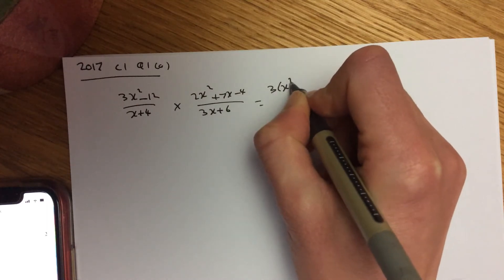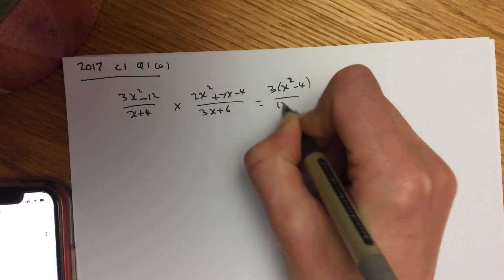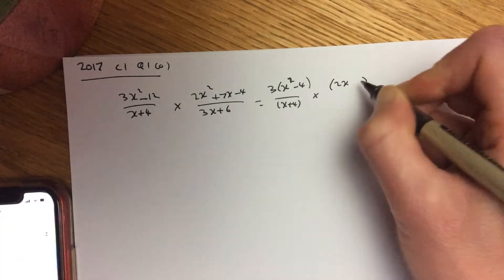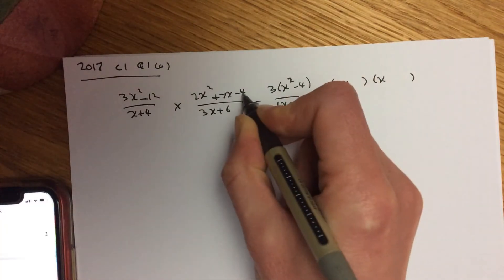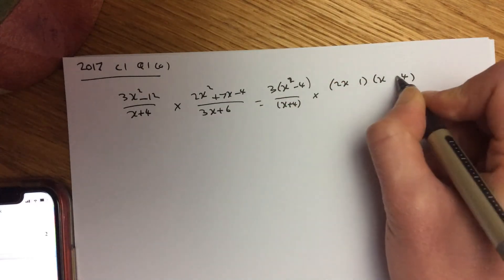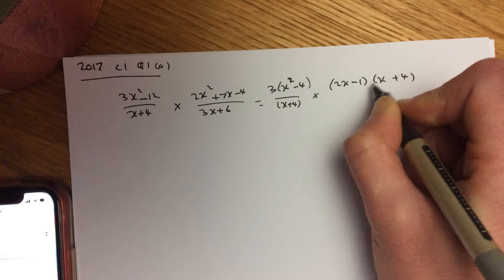So pull out your 3 first of all, put brackets around the bottom. This one here factorises to 2x multiplies 4, so put a 4 there and a 1 there. I want a 7, so positive 8 on the outside and minus 1 on the inside, all over.